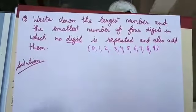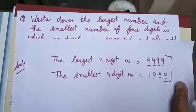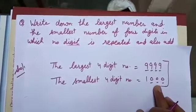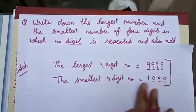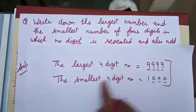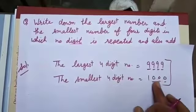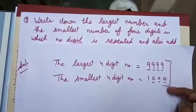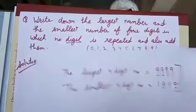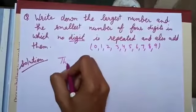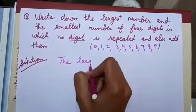Largest 4-digit number is 9999 and the smallest 4-digit number is 1000. But look carefully at these numbers. In the largest 4-digit number, 9 is repeated, and in the smallest 4-digit number, 0 is repeated. So I can't use these numbers here.